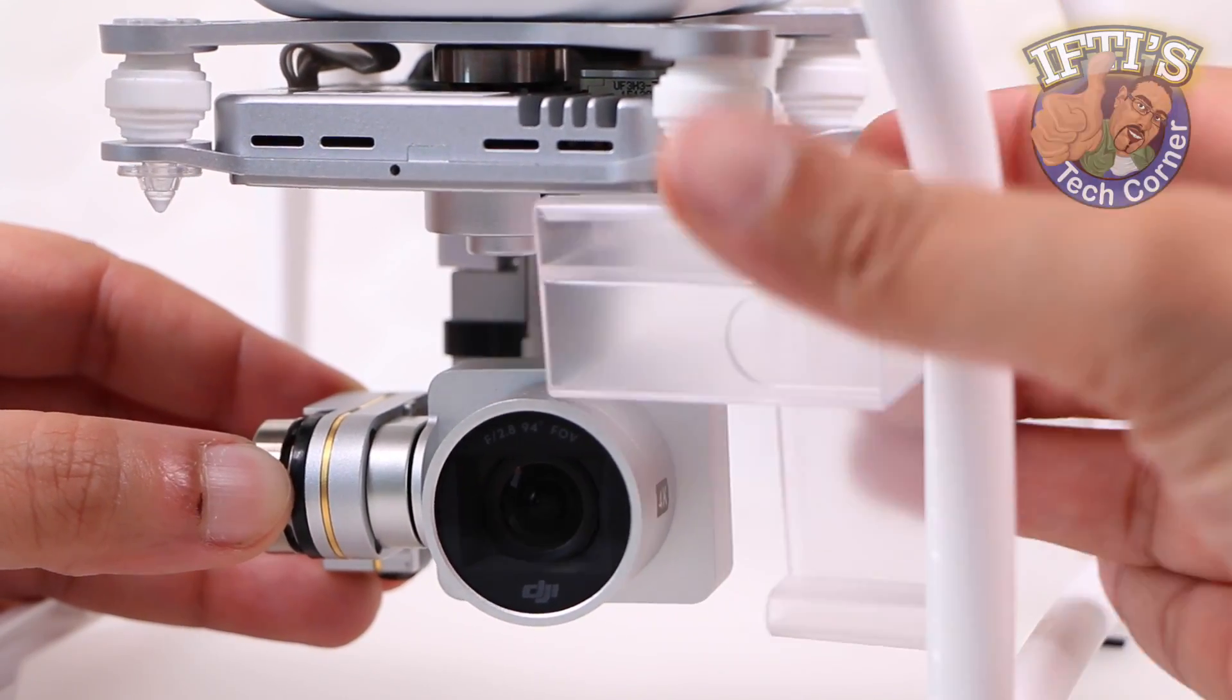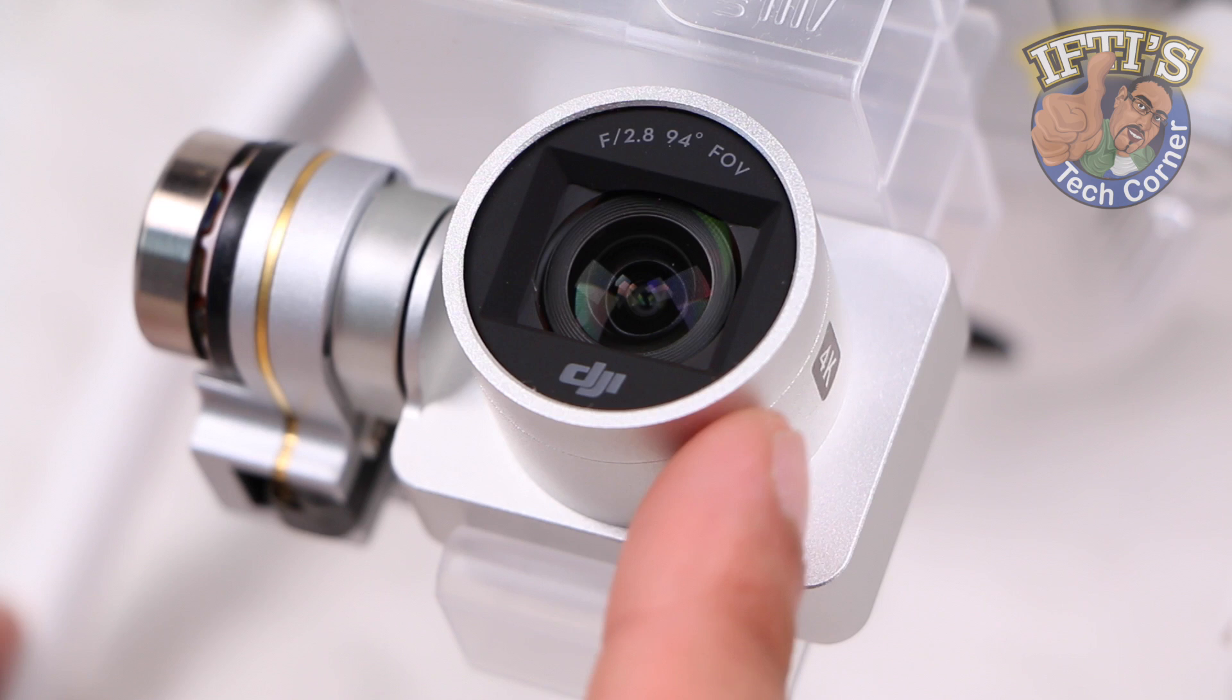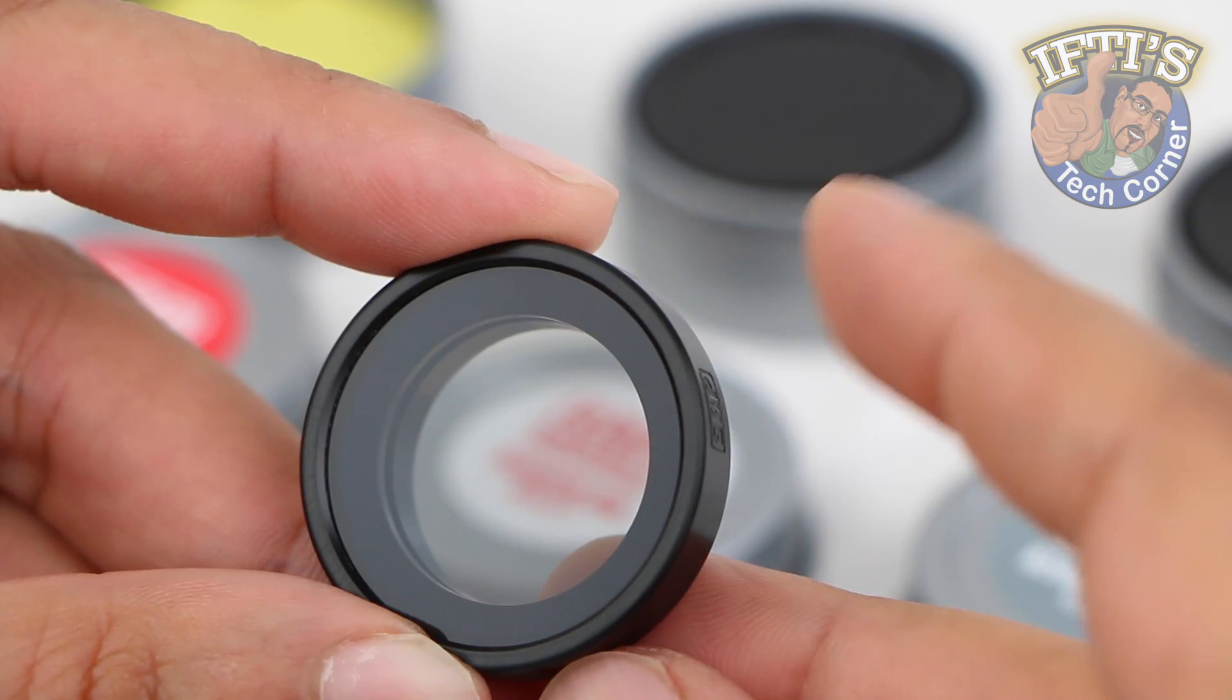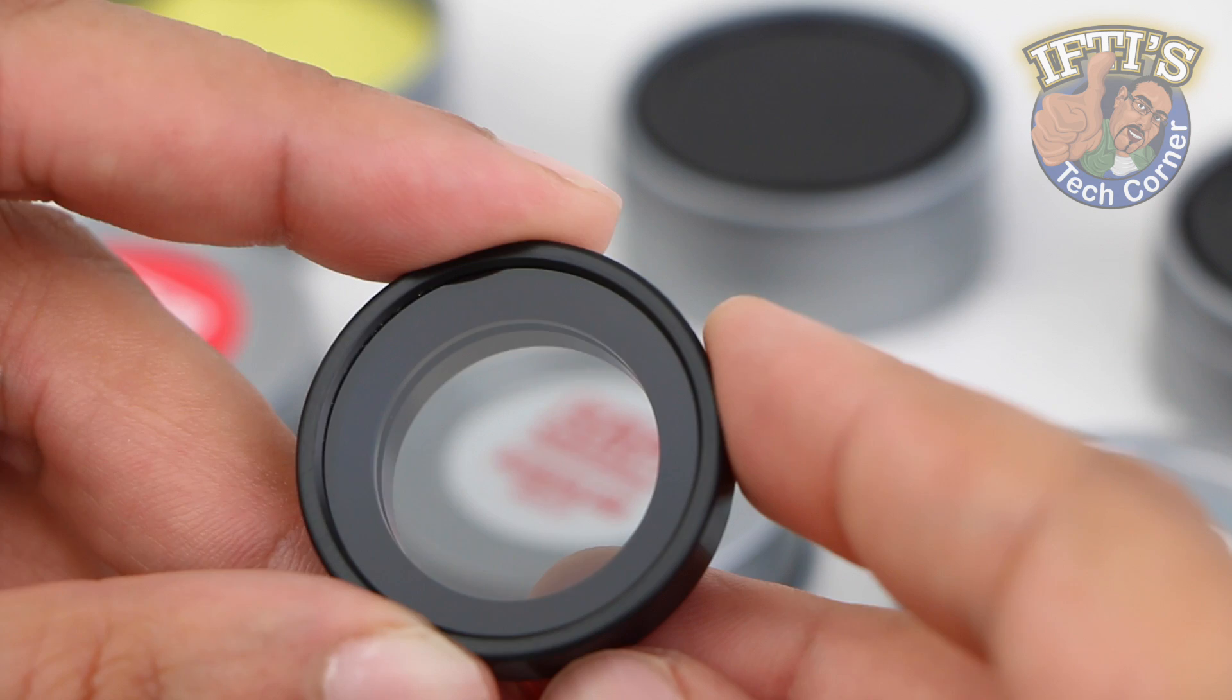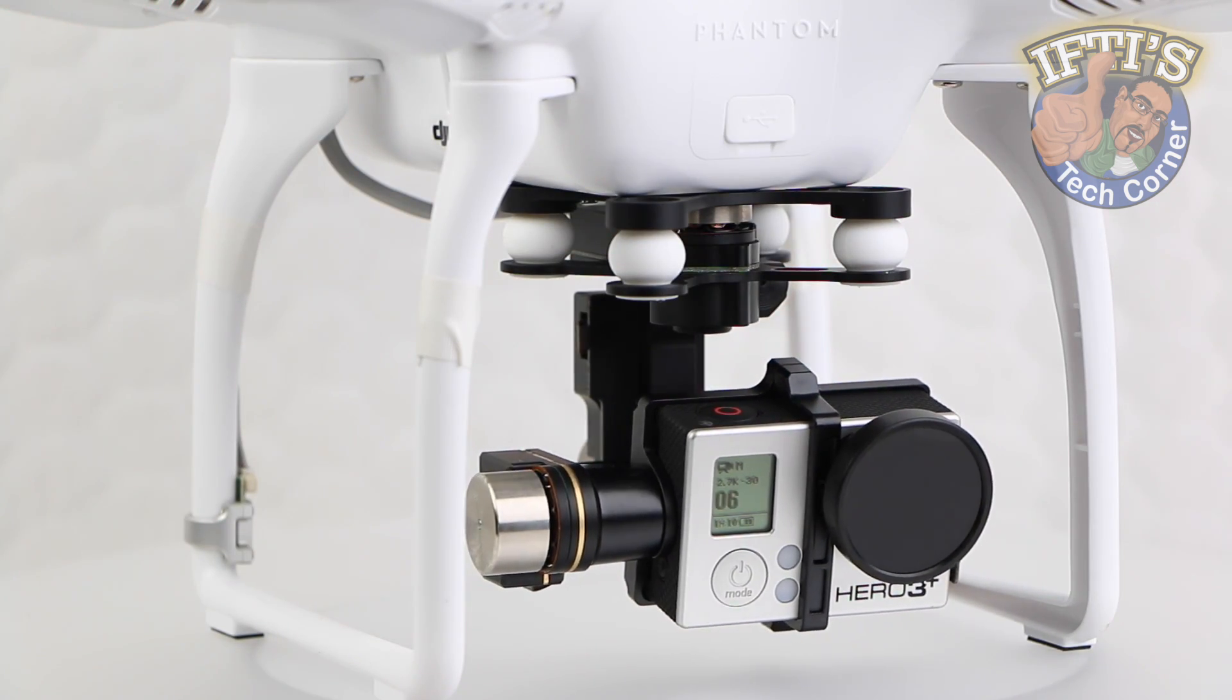There's no doubt the DJI Phantom 3 carries an impressive camera system offering up to 4K video capture. Even with the high quality recording, adding filters to any camera lens is a cheap and effective way of producing even better quality footage or great effects with ease.